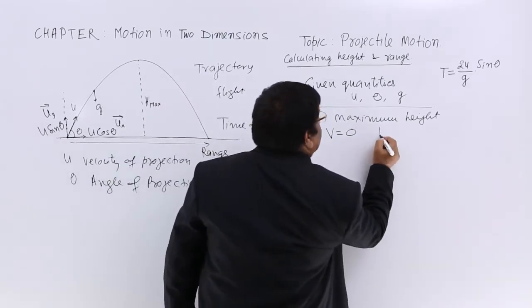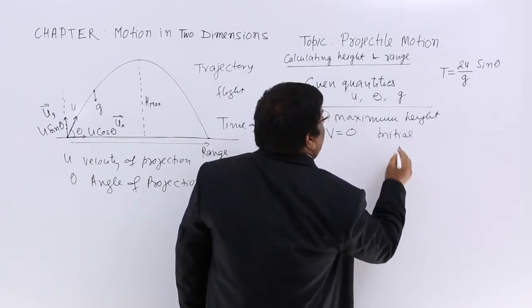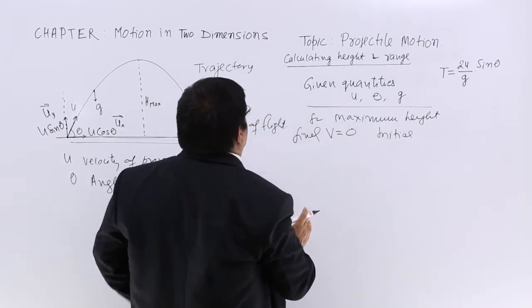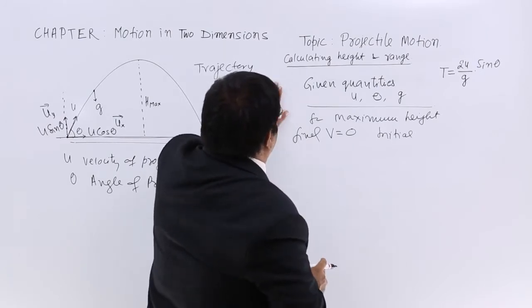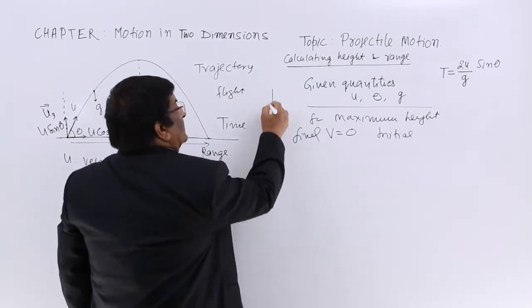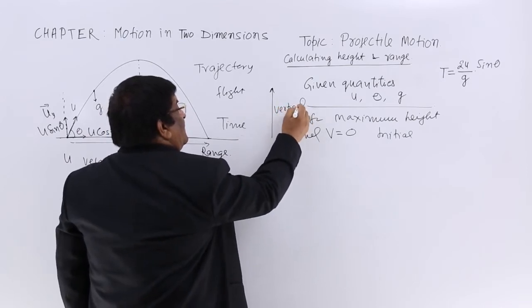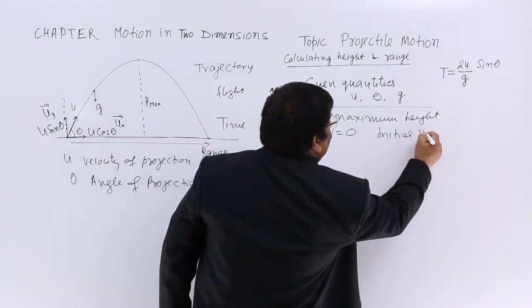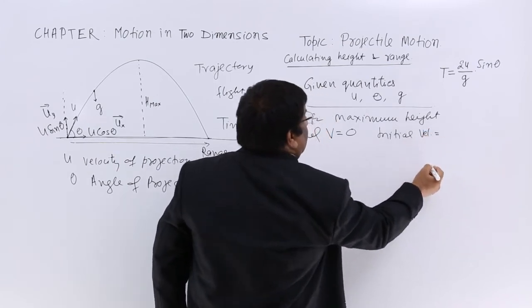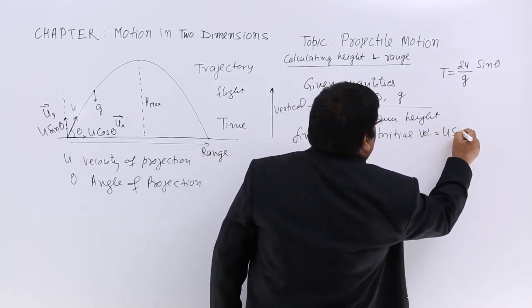What is the initial velocity? We are doing vertical calculations, so the initial velocity is equal to u sin θ.